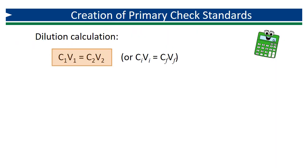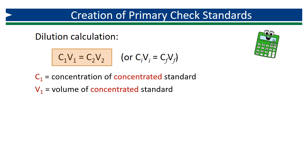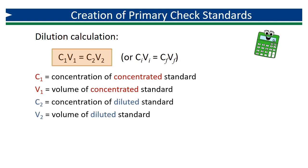Now let's review how to calculate the appropriate dilution. Do you remember the dilution formula from basic chemistry class? C1 times V1 equals C2 times V2. The concentration of the concentrated standard times the volume of the concentrated standard used — initial concentration times initial volume — is equal to the concentration of the final dilution times the volume of the diluted standard — final concentration times final volume. This calculation is based on the premise that when you do a dilution, the amount of material in solution remains the same; just the volume, and therefore the concentration, changes.